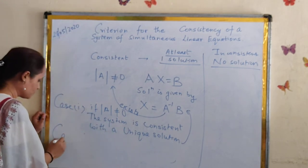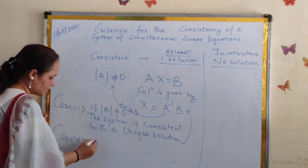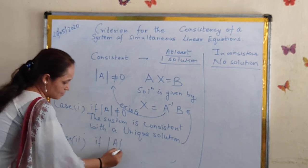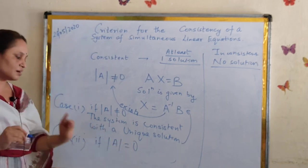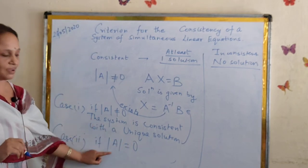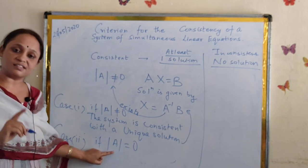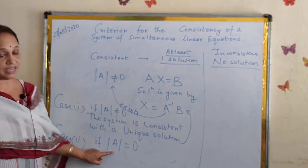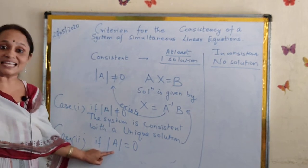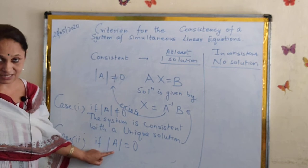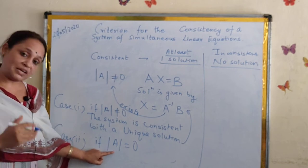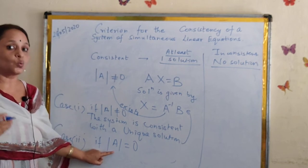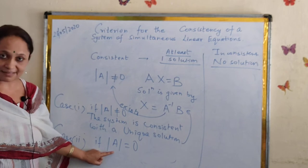Case 2: if the determinant of A is zero. Here we have to note down — determinant of A is zero. In that case, the system can be consistent or inconsistent. When will it be inconsistent, and when will it be consistent? We will discuss this.